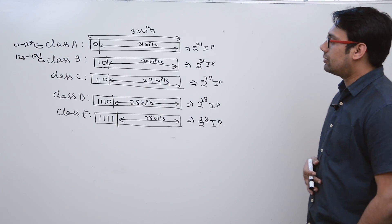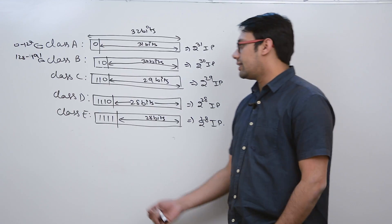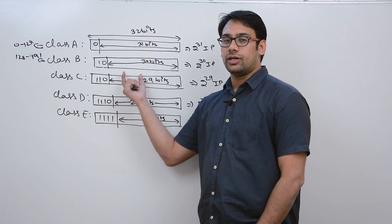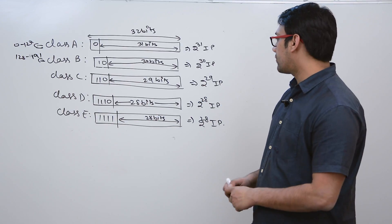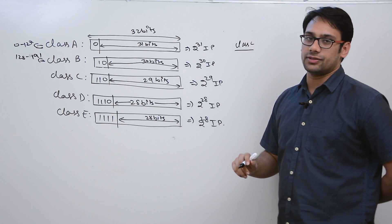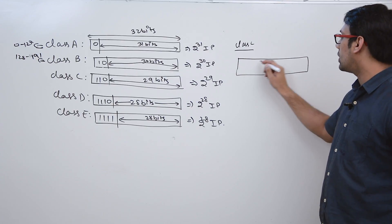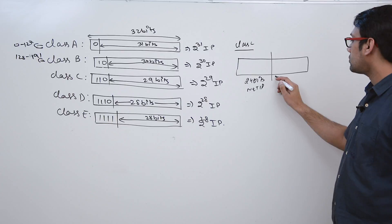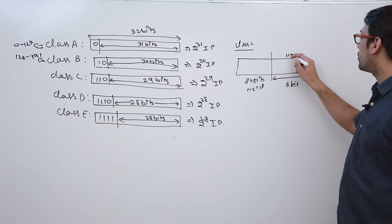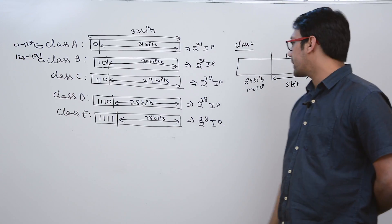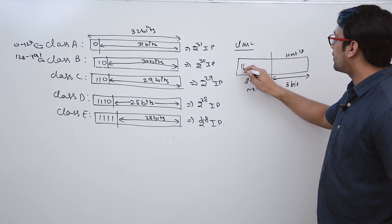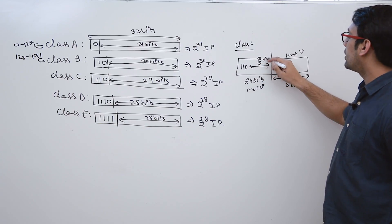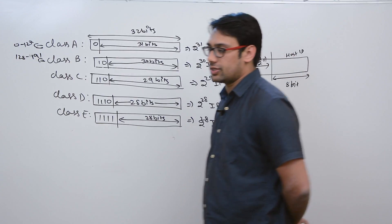We are discussing classful IP addressing, now focusing on Class C. In Class C IP addresses, the first three bits of the first octet are fixed as 110, and the remaining five bits can take any combination. In the complete IP address, the first 24 bits are used for the network ID and the remaining eight bits for the host ID. Since three bits are fixed, the remaining 21 bits can take 2^21 combinations, giving us 2^21 possible networks in Class C.